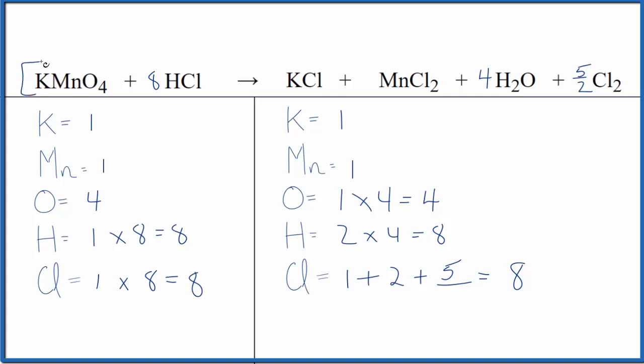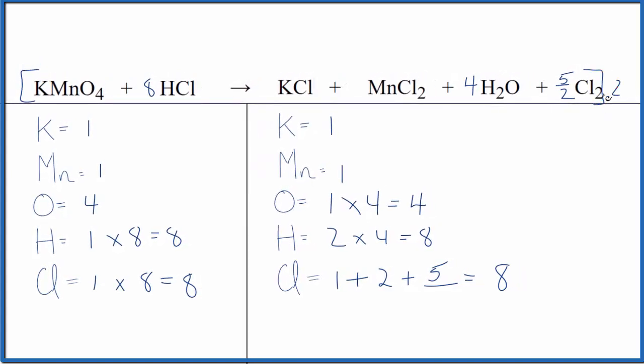If we multiplied everything here by two, these twos would cancel out. We'd be left with a whole number, but we have to multiply all of the coefficients by two, so we maintain that ratio. Let's do that. So this gives us whole number coefficients for the equation. If you wanted to write the states, they'd look like this.